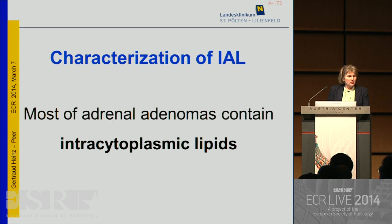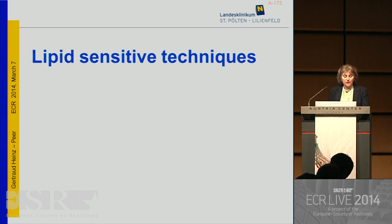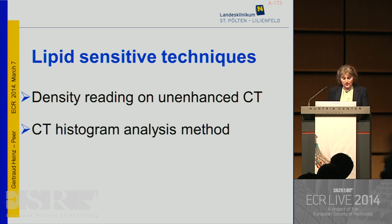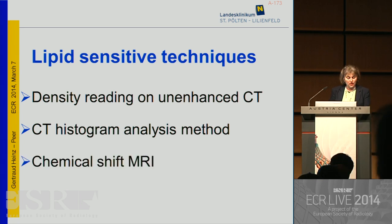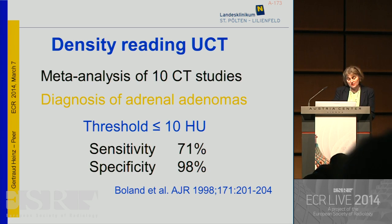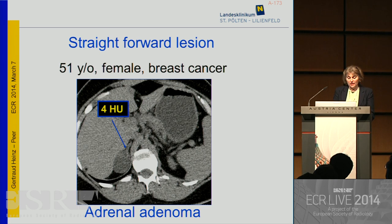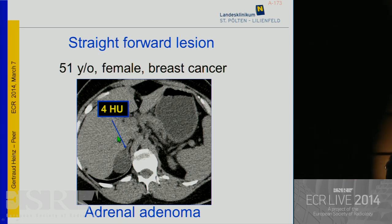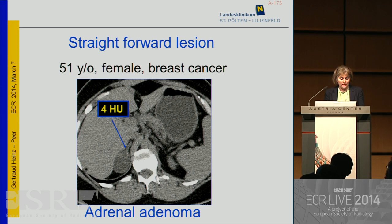Most adenomas contain a lot of intracytoplasmic lipids, and we can characterize these lipids either by doing density readings on unenhanced CT, including CT histogram analysis techniques, or we can use chemical shift MRI techniques. Boland and coworkers showed that using a threshold value of 10 Hounsfield units on unenhanced CT studies, this is associated with a very high sensitivity and specificity in characterizing adrenal adenomas. For example, a right adrenal lesion with four Hounsfield units on unenhanced CT clearly indicates an adrenal adenoma.